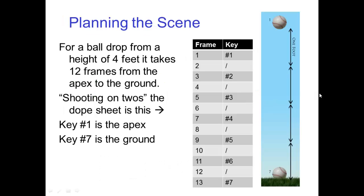So, getting back to the ball drop, let's say that the ball starts from a height of about four feet. By shooting reference or using a stopwatch, you find that it takes about half a second for the ball to hit the ground from this height. Half a second at 24 FPS is 12 frames. For an animation that is shot on twos, your dope sheet would look something like this. Key number one is on frame one, and then 12 frames later you have key number seven when the ball hits the ground.